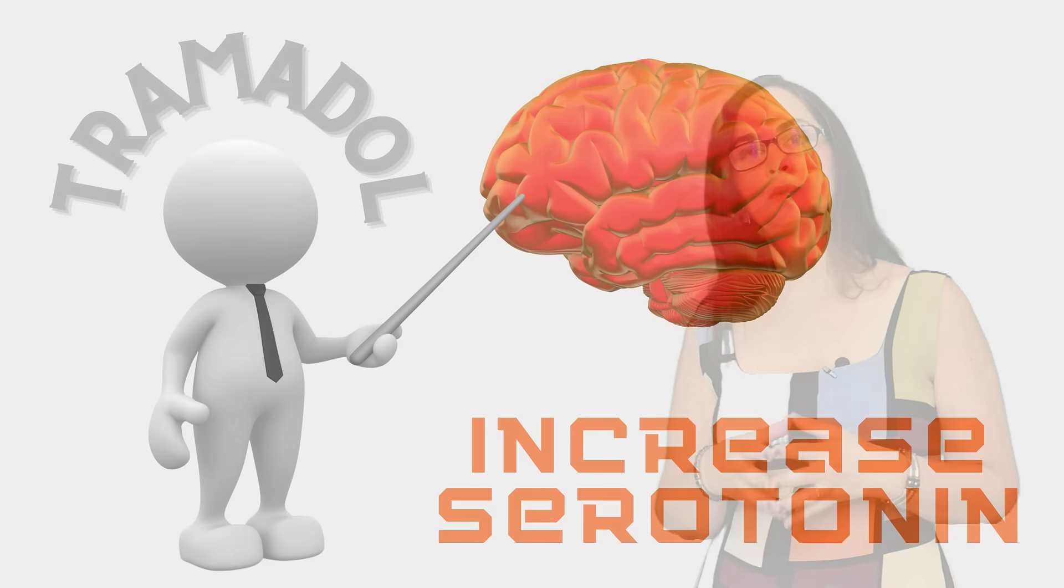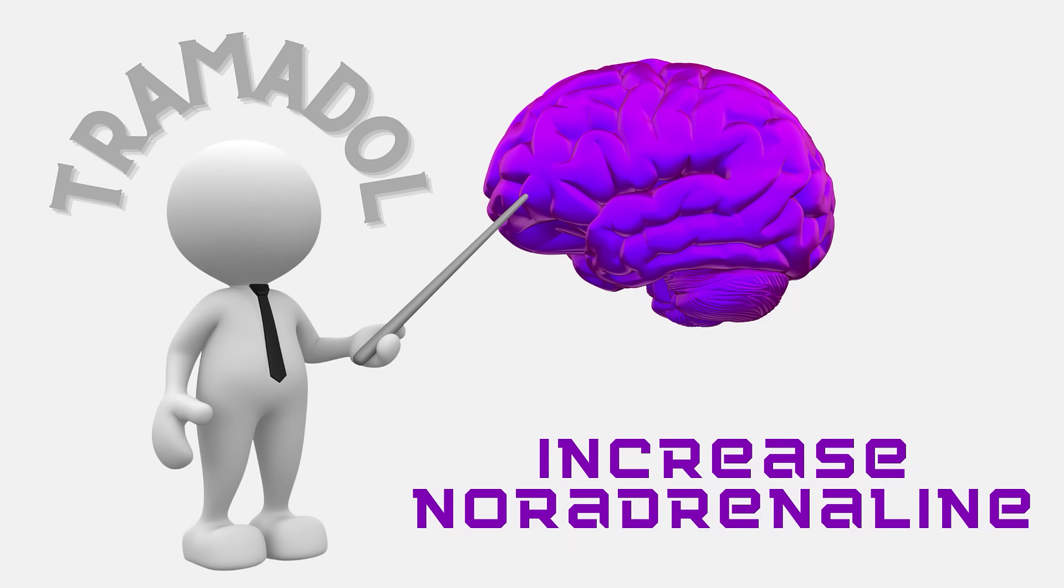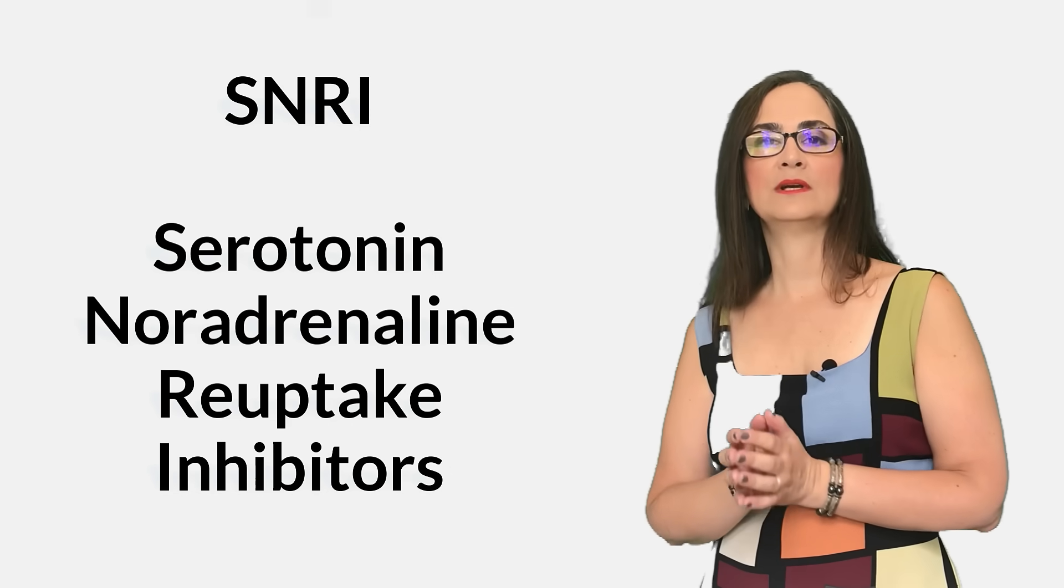But Tramadol will have an additional effect in the pain system, which is very helpful for people who have chronic pain. Tramadol will block the reuptake or reabsorption of serotonin and noradrenaline, two substances that are needed in the central nervous system in people who have chronic pain. In chronic pain, we use antidepressants called SNRIs or serotonin noradrenaline reuptake inhibitors with the intention to increase serotonin and noradrenaline in the central nervous system.